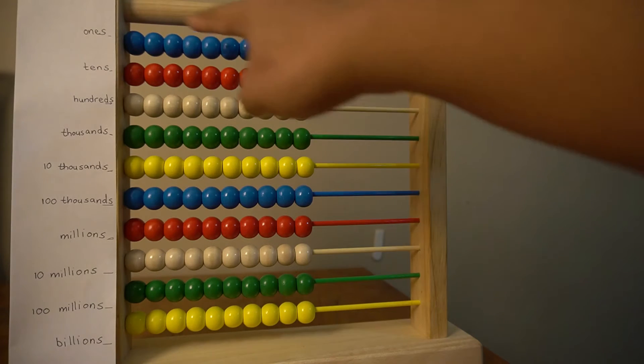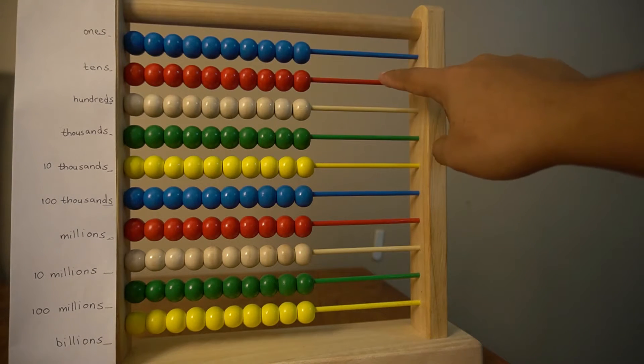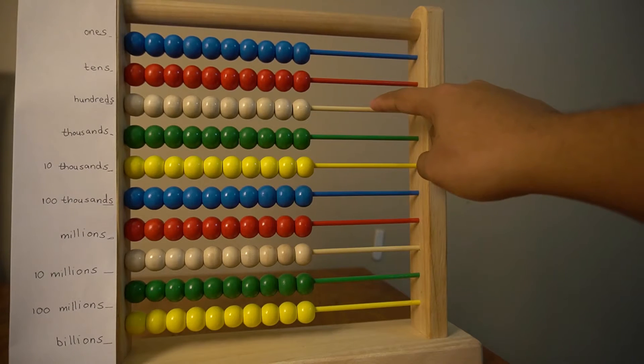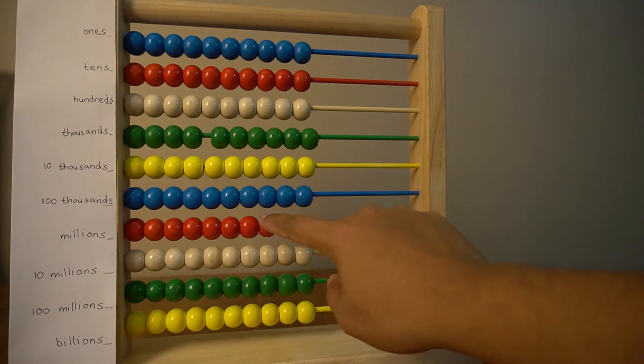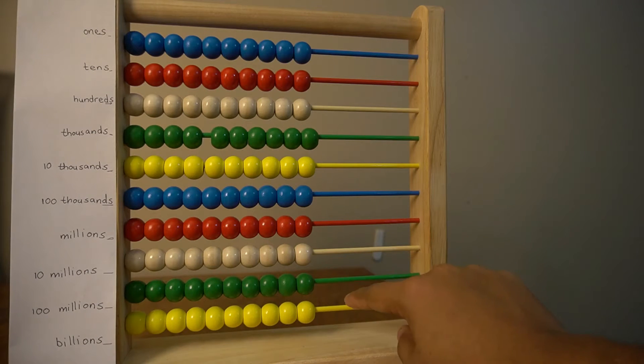Here is my ones row. Here's my tens row, a hundreds row, a thousands row, ten thousand, hundred thousand, million, ten million, hundred million, and a billion.